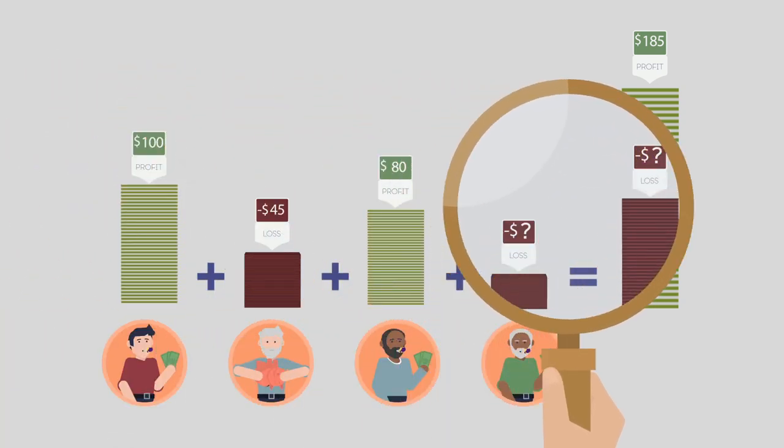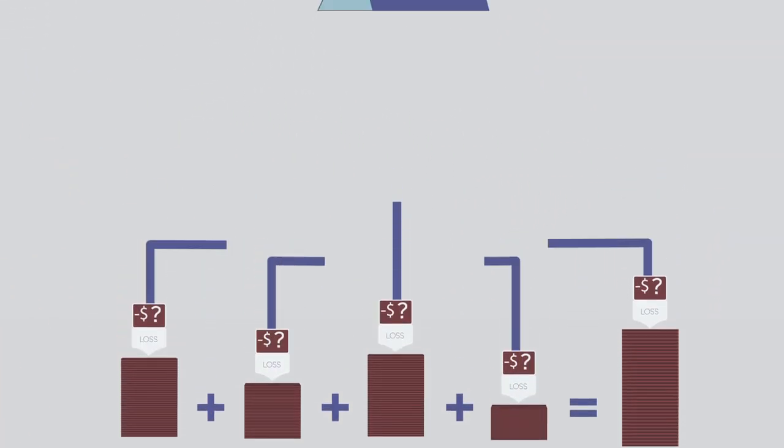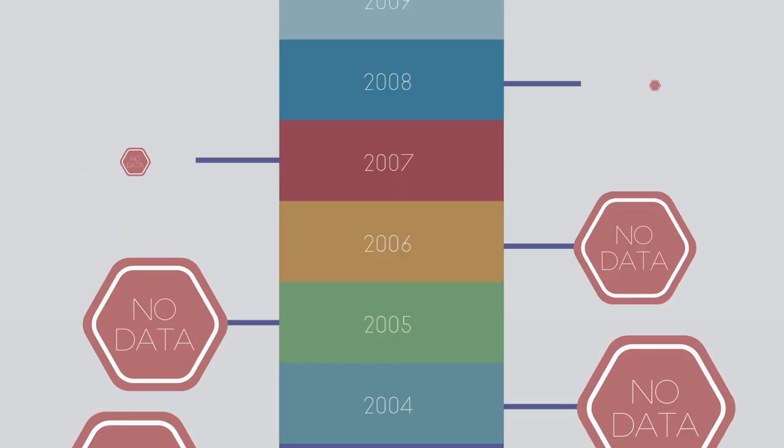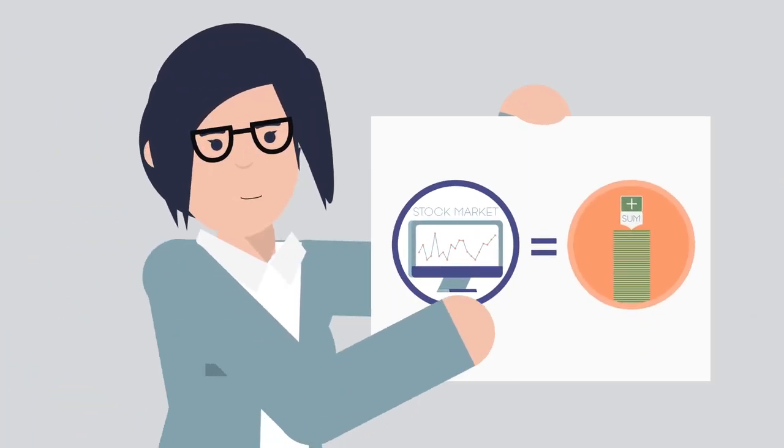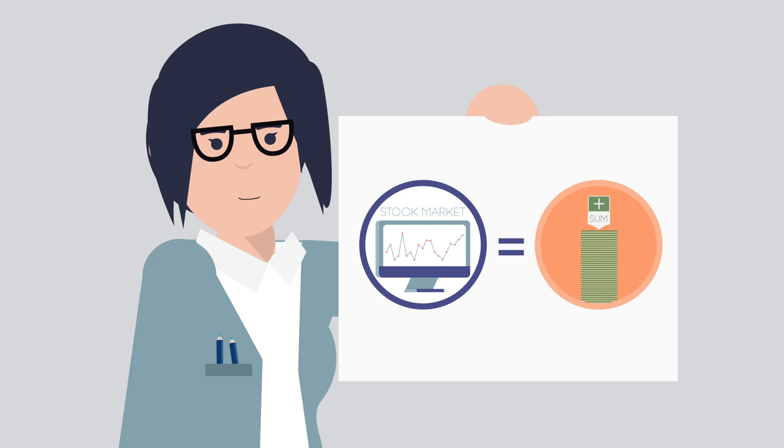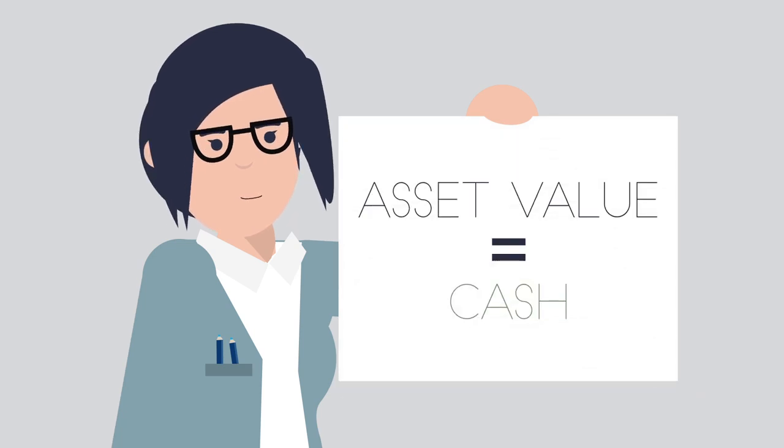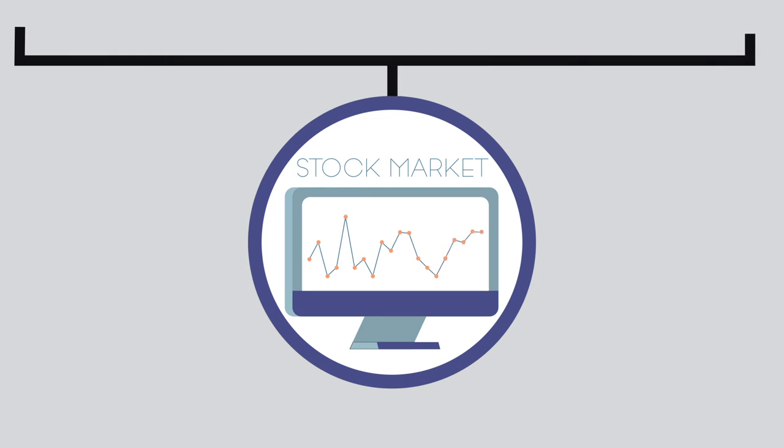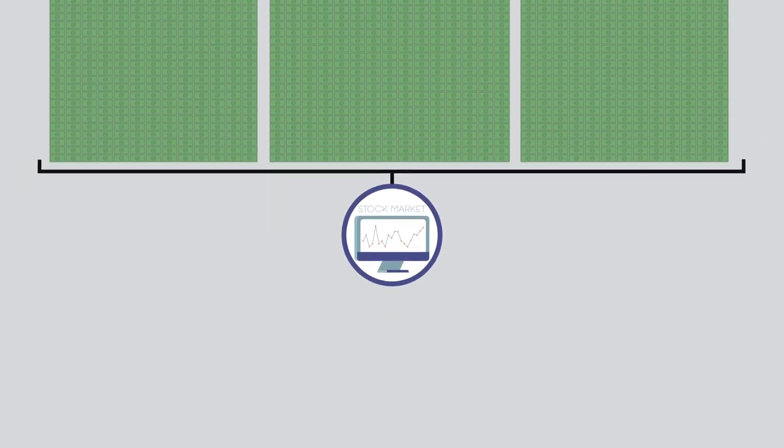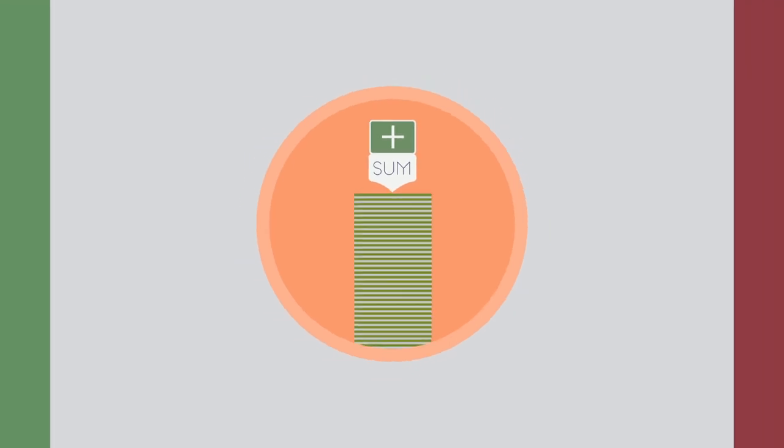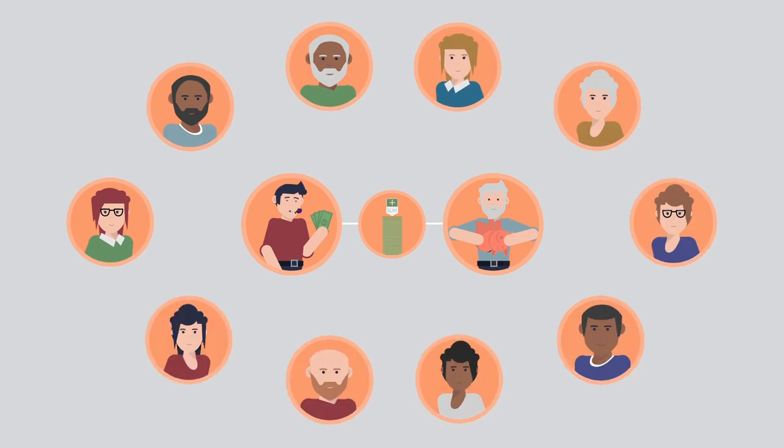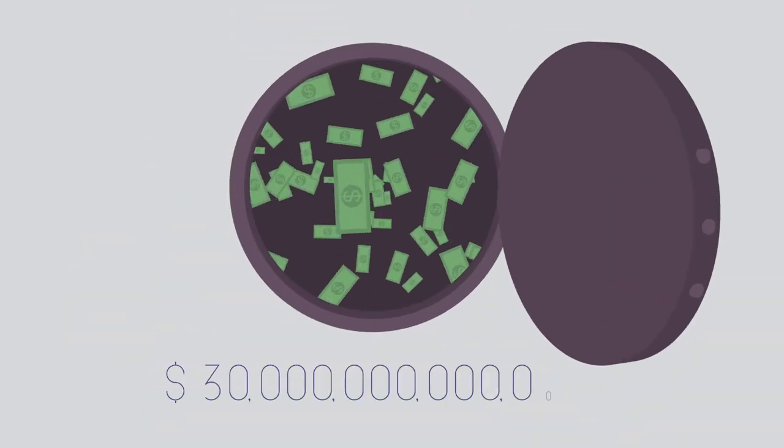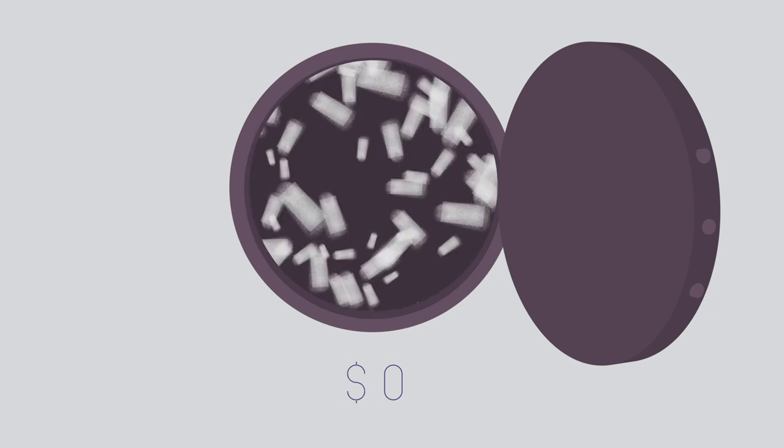There is no database that tracks investor losses, and no one knows how much investors have been winning or losing over the years. The reason why people think the stock market is positive sum is that they believe in the second fallacy and think people must have made money because the stock market has grown to $30 trillion. But a real positive sum situation needs to consider the wins and losses of all the investors that are involved, which includes the last investors holding $30 trillion of imaginary money that doesn't exist.